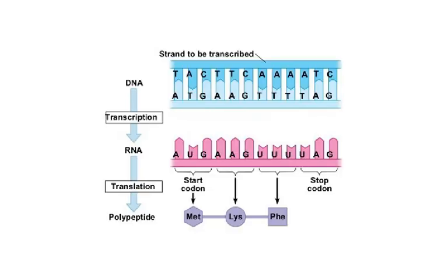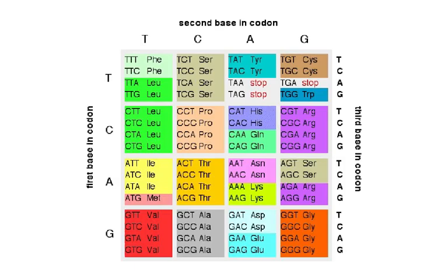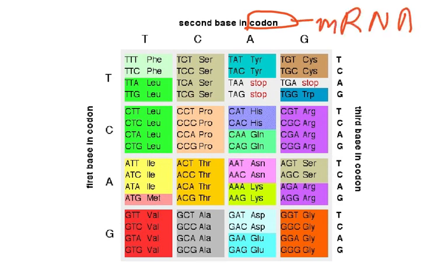A diagram is shown — is there a mistake? The diagram labels something as a 'codon' but shows a T. Codons are on RNA, so there should be no T. U is only present in RNA, not DNA. That is the mistake — T should not appear in a codon. This type of error could appear in an exam question, so be alert to it.